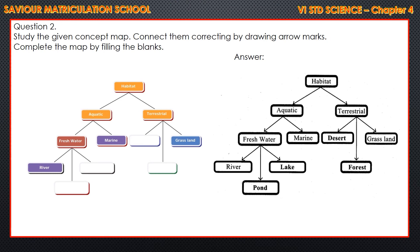Question 2: Study the given concept map, connect them correctly by drawing arrow marks, and complete the map by filling the blanks. Habitat is classified into two: aquatic and terrestrial. Aquatic is again classified into freshwater and marine. Terrestrial is classified into desert, grassland and forest. Freshwater is again classified into river, lake and pond.